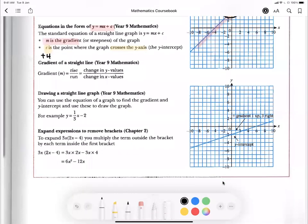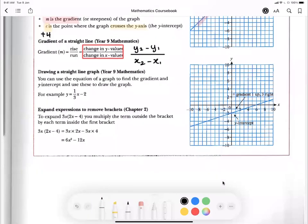Gradient of a straight line, you can find by using this formula here, change in y value over change in x value, or in other words, is y2 minus y1 over x2 minus x1. Okay, so after you do that, then you can draw a straight line.